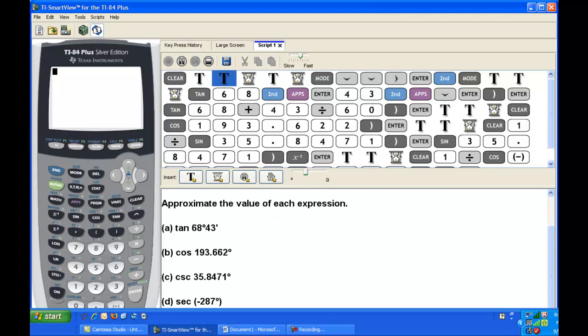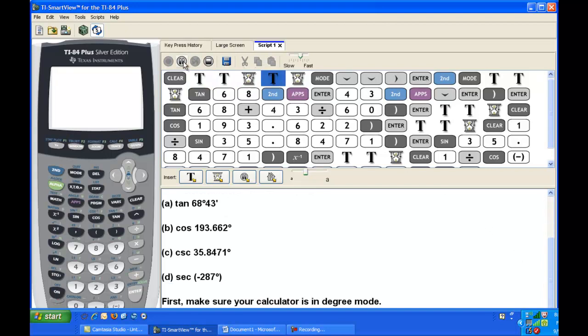For this exercise, we're going to approximate the value of each expression. First, we'll find the tangent of 68 degrees 43 minutes, then cosine of 193.662 degrees, the cosecant of 35.8471 degrees, and finally the secant of negative 287 degrees.